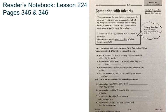In our practice today, numbers one through four, circle the adverb in each sentence. Write C on the line if it is a comparative adverb — that means two things are being compared. Write S if it is a superlative adverb, meaning comparing more than two things.